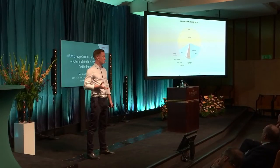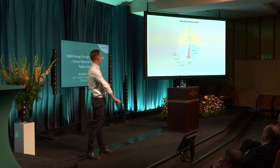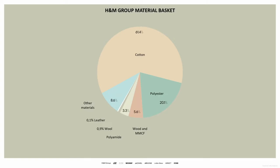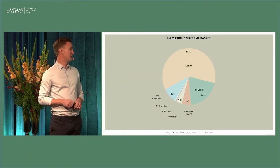Also the demand: what kind of demand do we have as H&M Group? This is our 2021 H&M Group material basket. As you can see, the main portion is cotton, about 62% that we use is cotton. 20% is polyester. Then we have 5.6% wood and MMCF. Then we have a couple of other materials like leather, wool, nylon and so on.